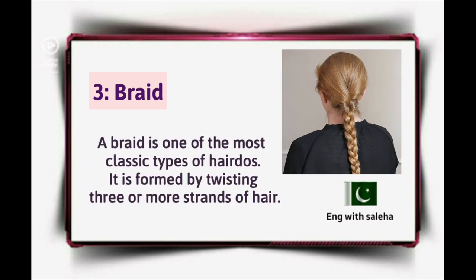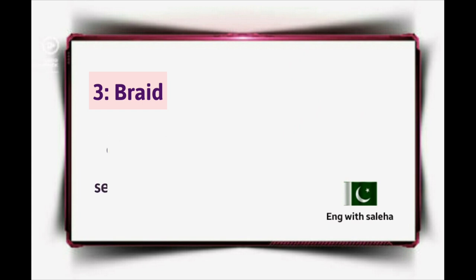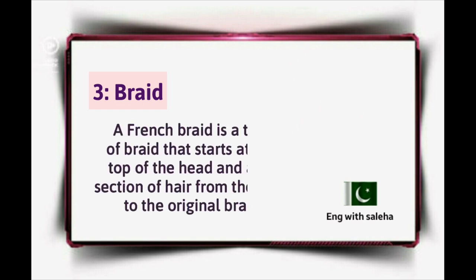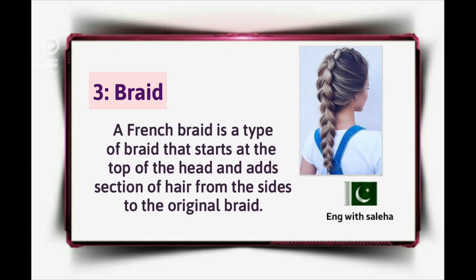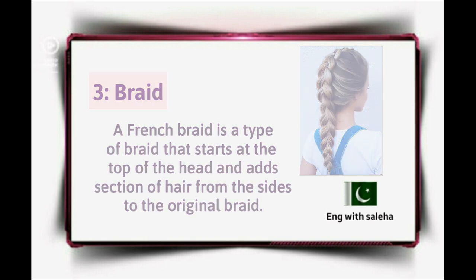Braid. A braid is one of the most classic types of hairstyles. A braid is a hairstyle formed by twisting three or more strands of hair. A French braid is a type of braid that starts at the top of the head and adds sections of hair from the sides to the original braid.